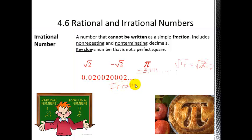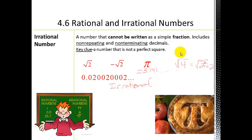That's all you'd need to say. If a question asks whether a number is rational or irrational, you'd write 'irrational — non-terminating decimal and non-repeating.' But if you see a perfect square, you'd label it rational.